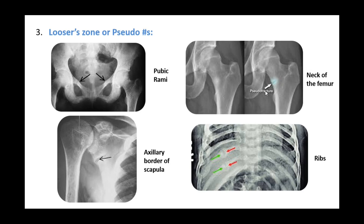Looser zones can also be seen in the neck of the femur, the axillary border of the scapula, and in the ribs. These areas show the characteristic pseudo fracture appearance of Looser zones.